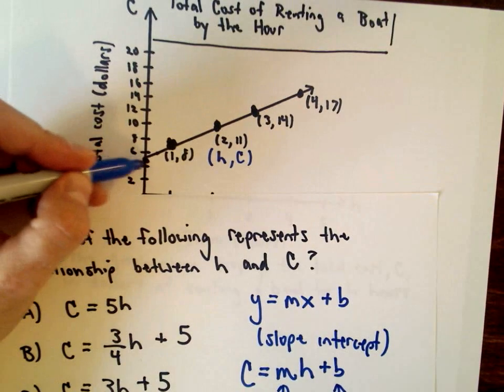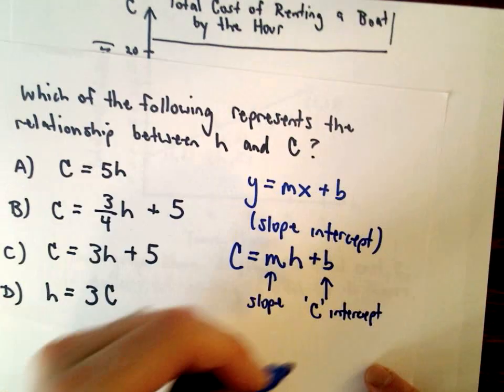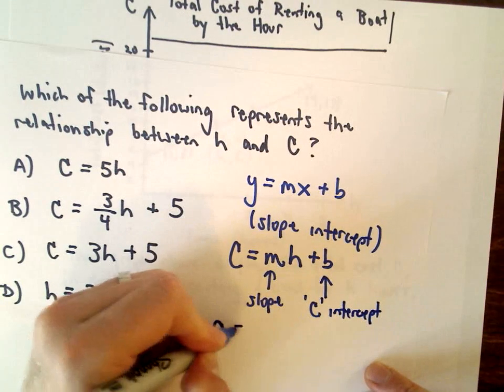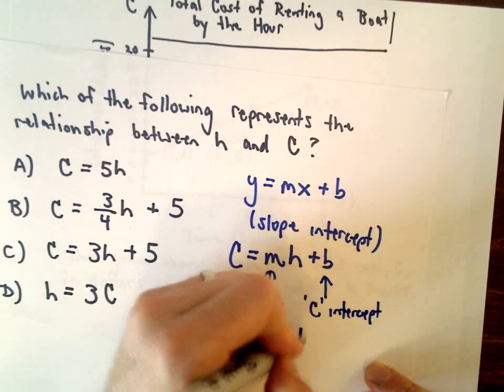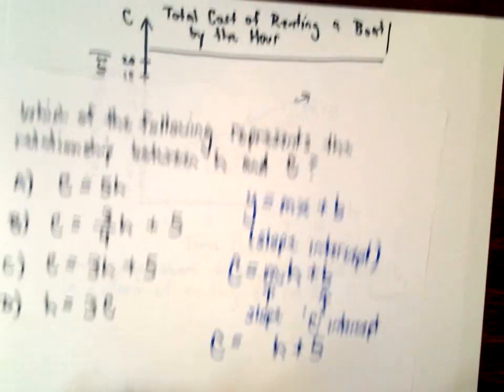Okay, well the c-intercept had a value of five. It's going through the point zero comma five, so I know that the plus b is going to be replaced with plus five.